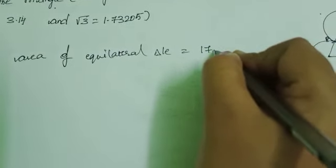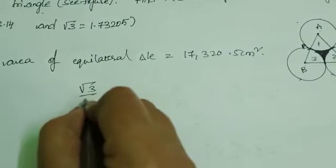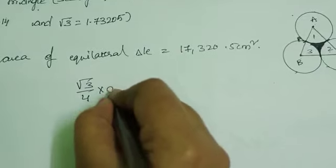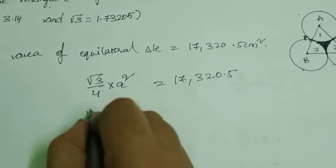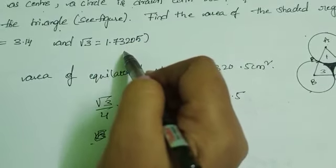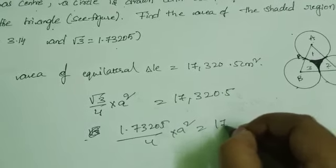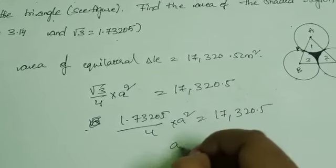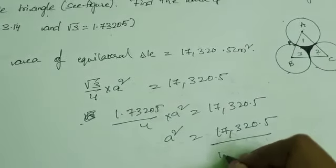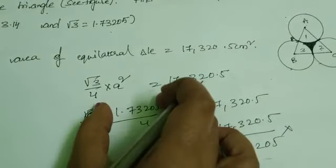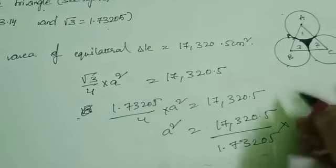The formula for area of an equilateral triangle is (√3 / 4) × side². Suppose side equals A. So: (√3 / 4) × A² = 17,320.5. Using √3 = 1.73205, we get A² = 17,320.5 × 4 / 1.73205.